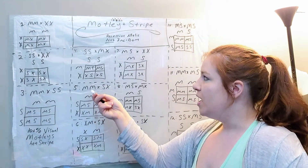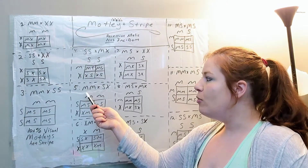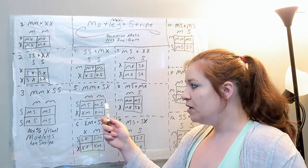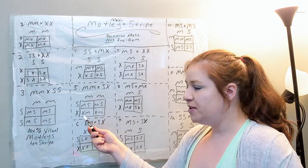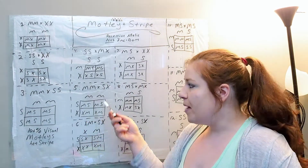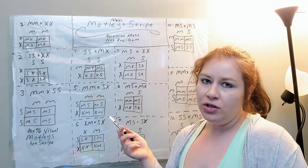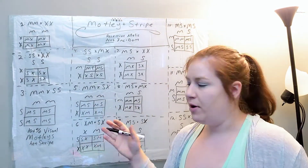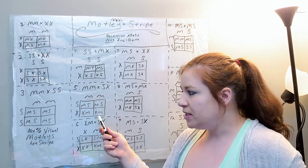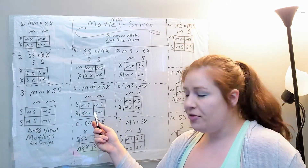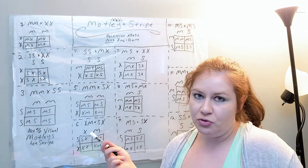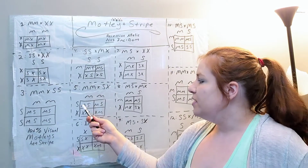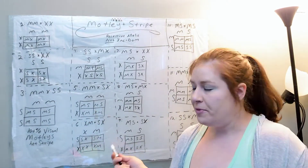Pairing five is a homozygous Motley to a normal Het for Stripe. Again, you're going to get half normals, but this time those normals are all Het for Motley since the Motley parent was homozygous. So all of the babies have Motley on one side and nothing on the other side — that's a normal Het for Motley. And then the other half have Stripe on the other side, making them visual Motleys Het for Stripe.